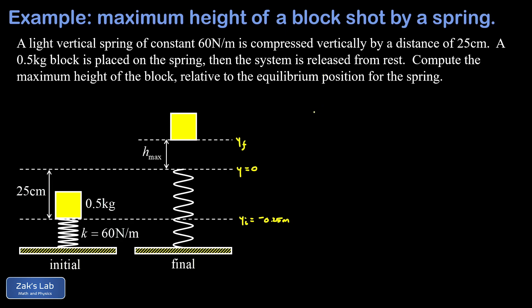So we're using energy conservation to solve this problem. We're going to start at the very beginning, I'm going to say E initial is equal to E final. And then we have to ask what are all the different types of energy happening in the initial state and the final state and write down all those terms.